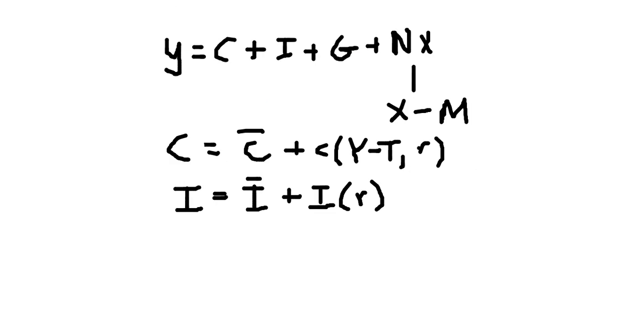Aggregate output y is also equal to its component c plus i plus g plus net exports, exports minus imports, and I'll probably just start using x for net exports from now on.